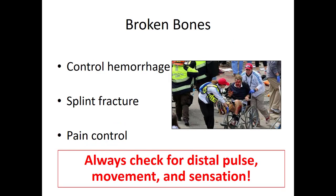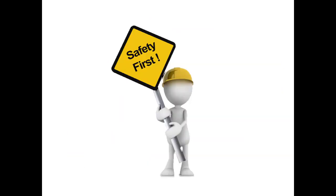A quick reminder on orthopedic injuries: priorities are controlling hemorrhage, especially with open fractures, then splint for comfort and ease of transport, and control pain. Always check for distal pulse, movement, and sensation in the fractured extremity. In a mass casualty situation you may be pressed for time, but documenting loss of pulse in a distal extremity is very helpful to the receiving hospital. And please remember: your safety is first. You can't help anybody else if you're not taking care of yourself. Make sure you have all appropriate PPE and the scene is safe before you go in.